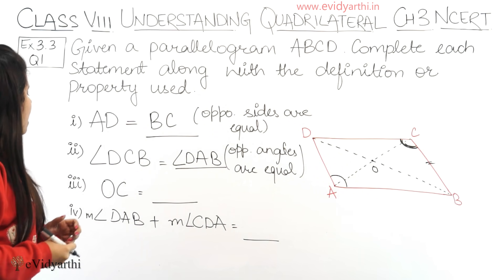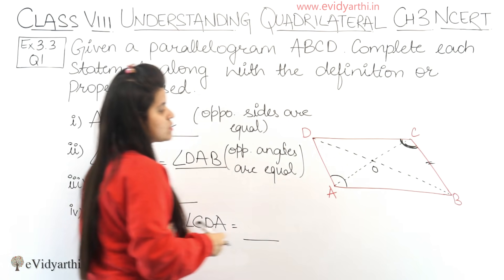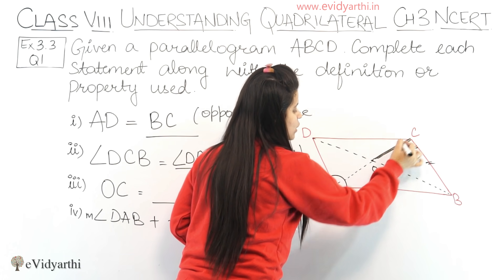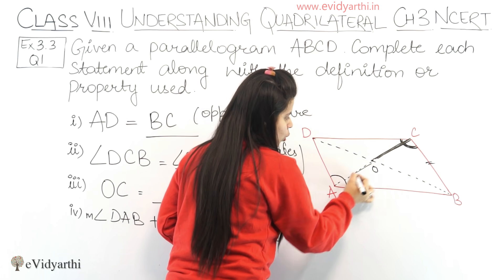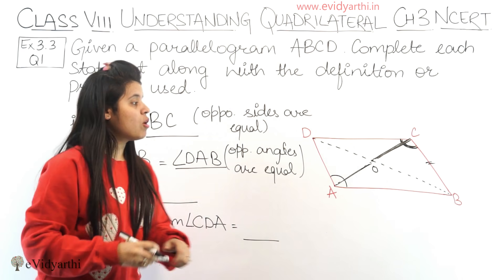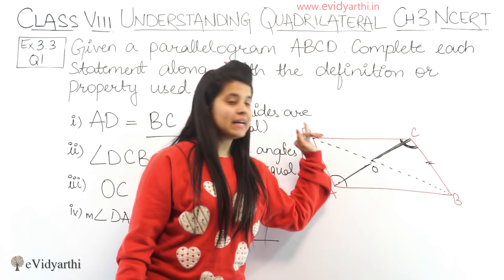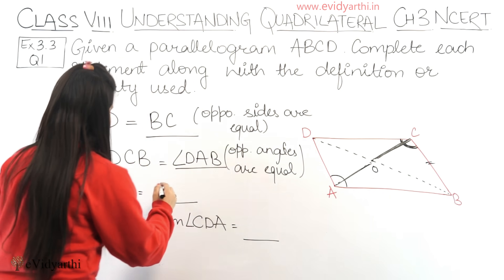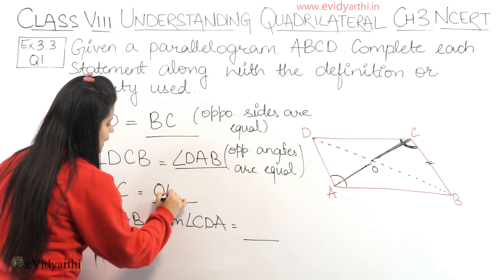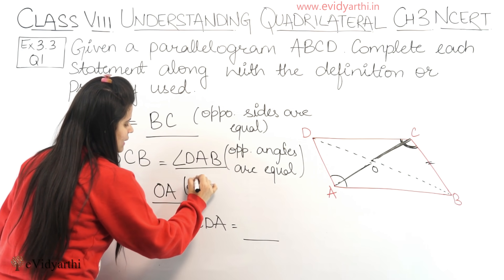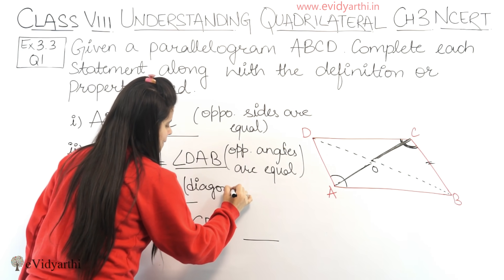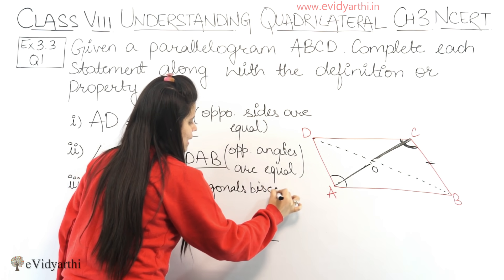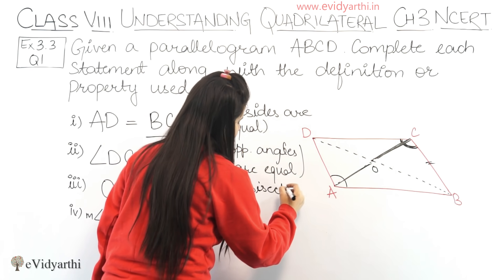Next, OC equals to — OC is from here to here — and this will be equal to OA. This is because the diagonals of a parallelogram bisect each other, meaning they cut each other into equal parts.